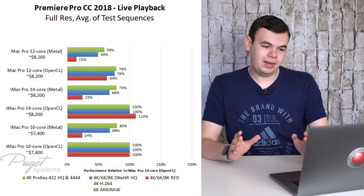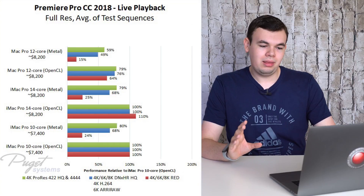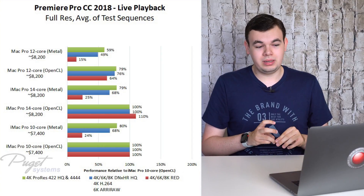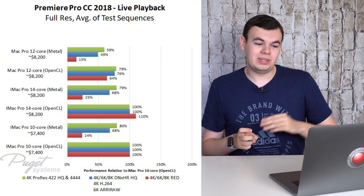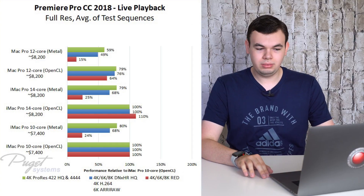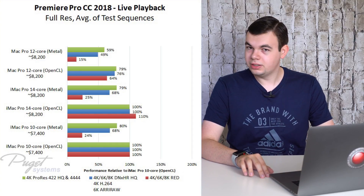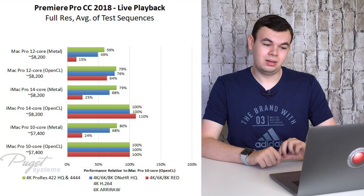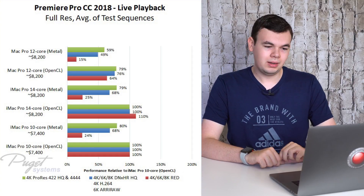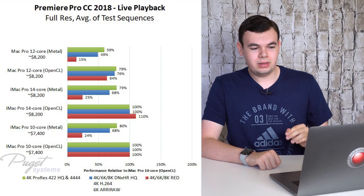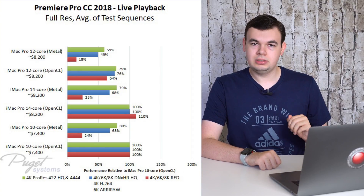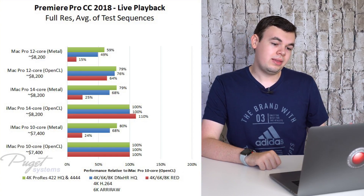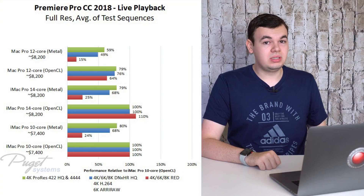Looking at just the 10-core iMac Pro, you can see that in the edit-ready green category, Metal gets 80% of the performance compared to OpenCL. Then it goes down from there — 68% on the blue codecs, and for red raw footage that has to be debayered live during playback, we only get 24% performance compared to OpenCL. OpenCL performs much better than Metal across all of these machines.